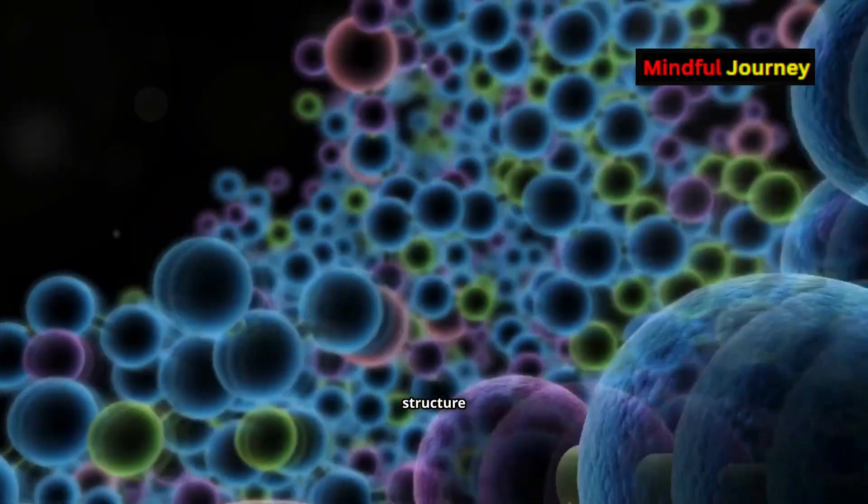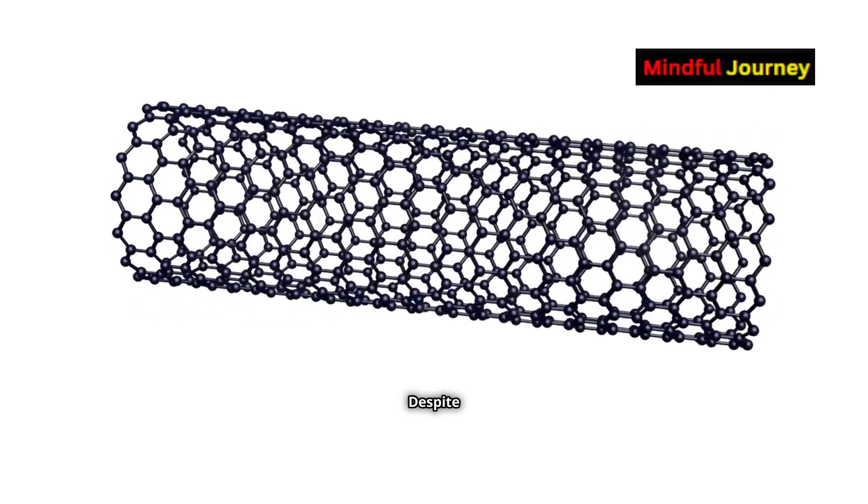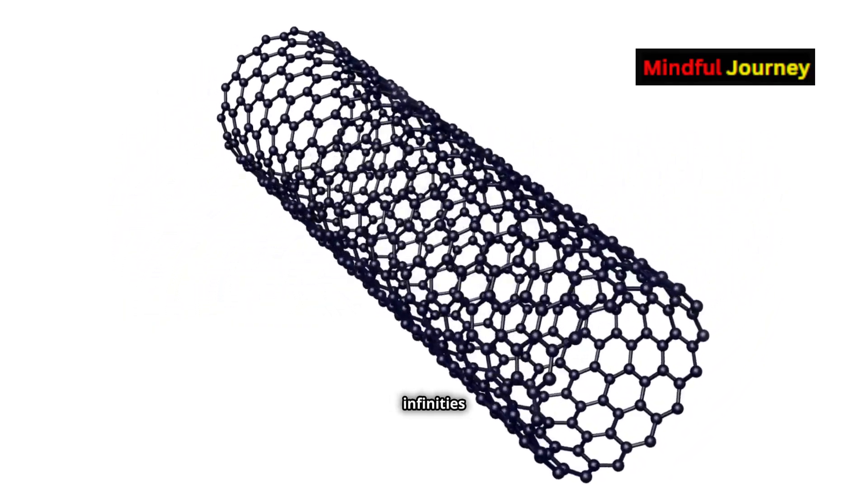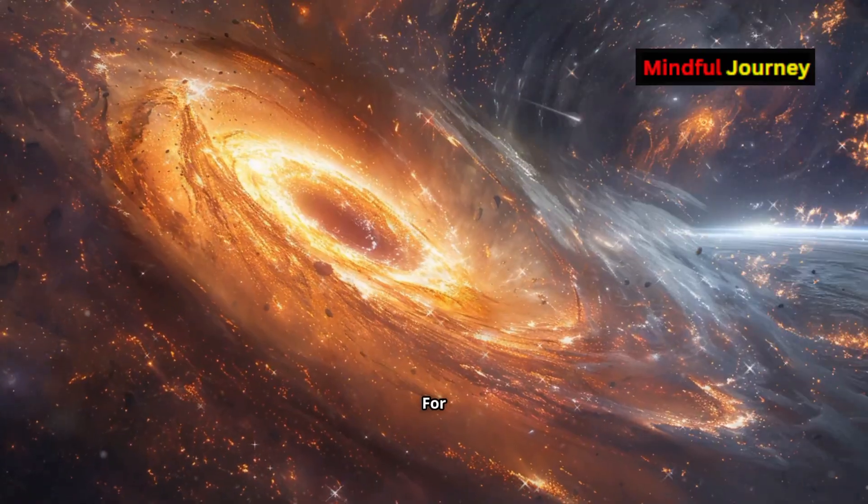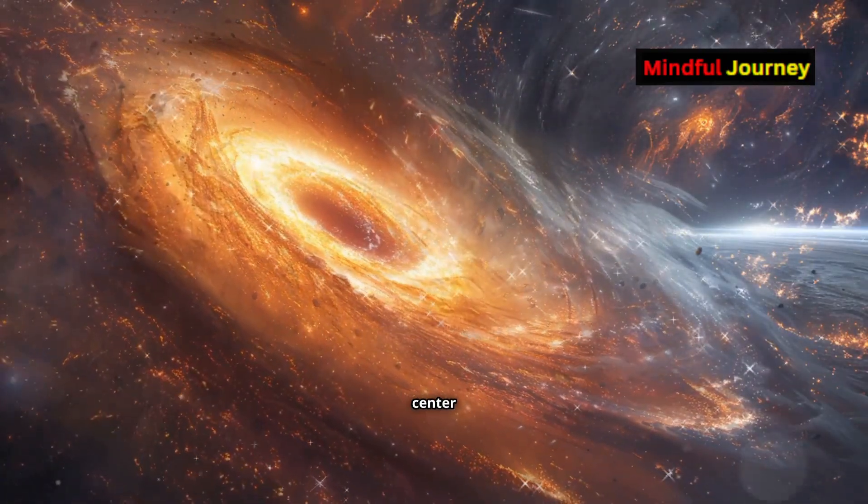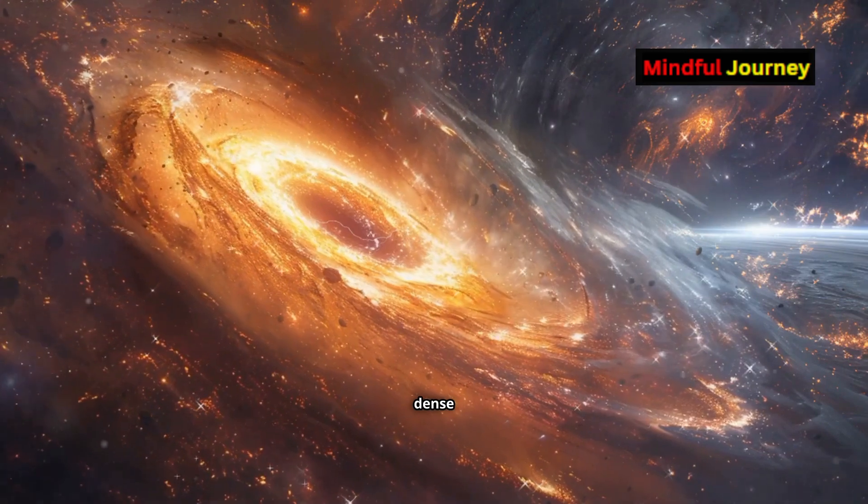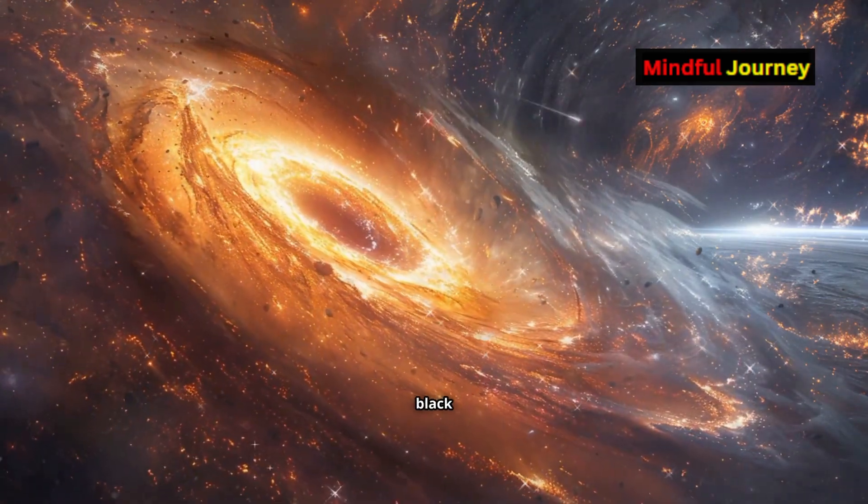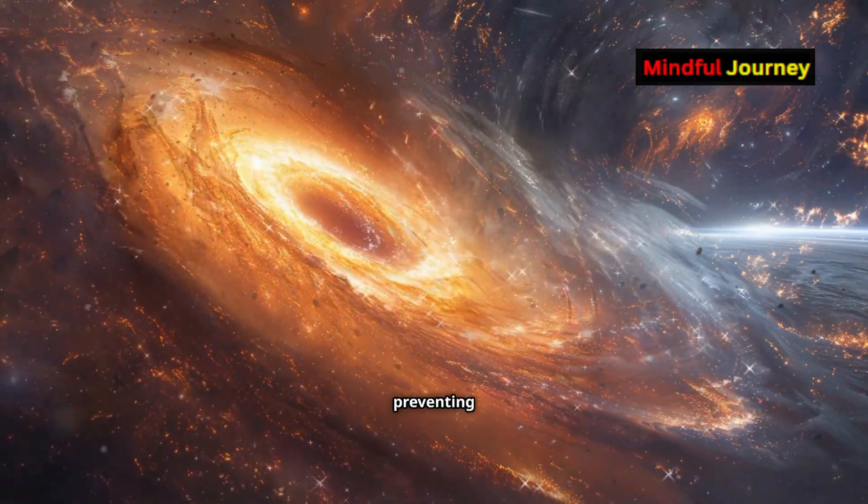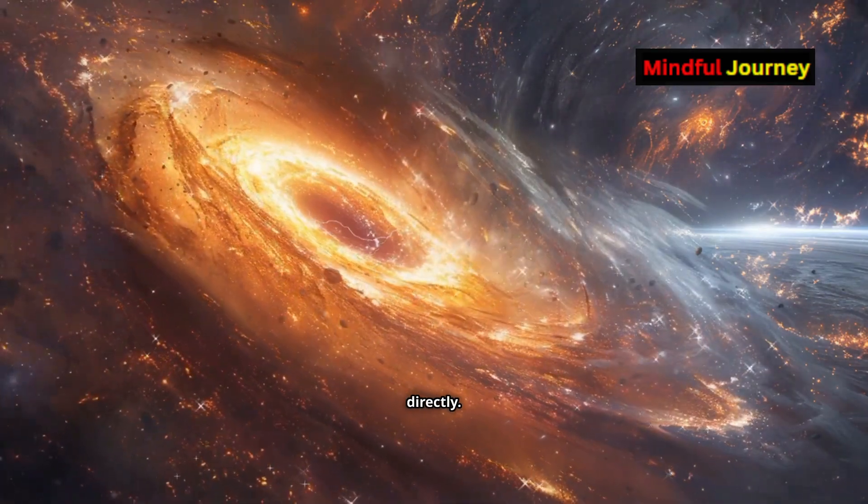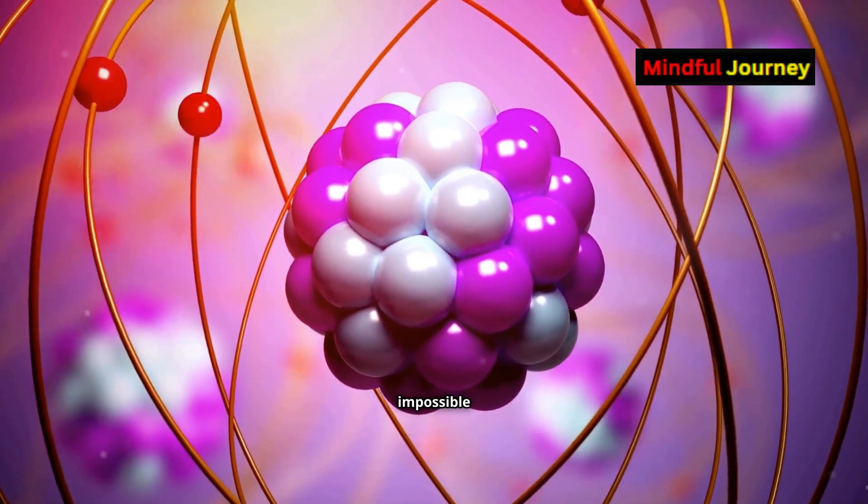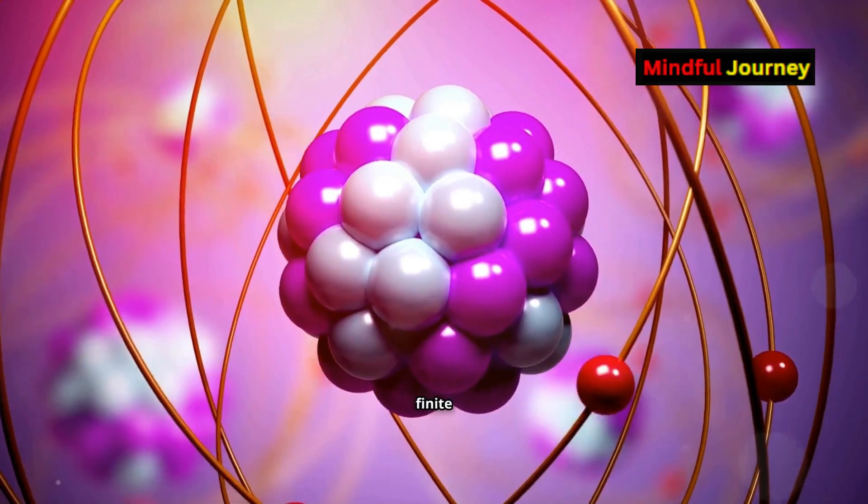Despite this, predicting actual infinities is extremely challenging. For instance, we don't know if the center of a black hole is infinitely dense because the event horizon of the black hole acts as a barrier, preventing us from observing it directly. This makes it impossible to determine whether the density is finite or infinite.